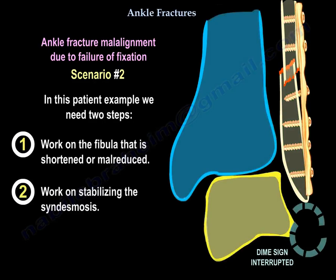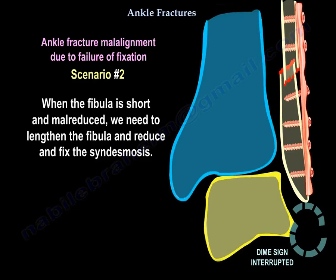In this example, we need two steps. Step one: work on the fibula that is short or mal-reduced. Step two: work on stabilizing the syndesmosis. When the fibula is short and mal-reduced, we need to lengthen the fibula and then reduce and fix the syndesmosis.